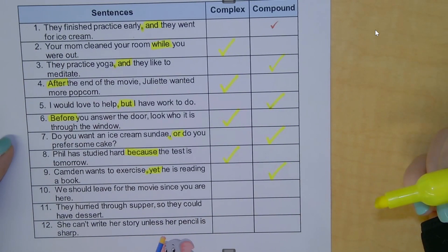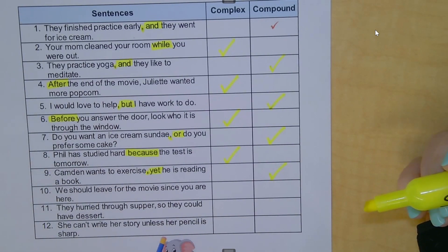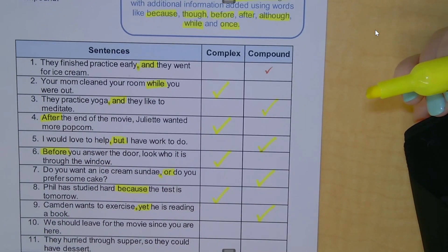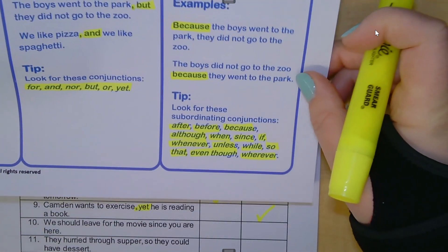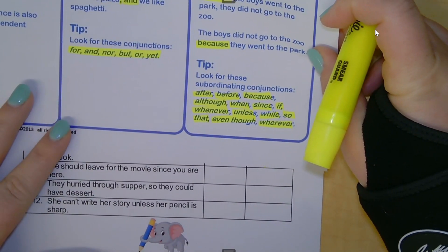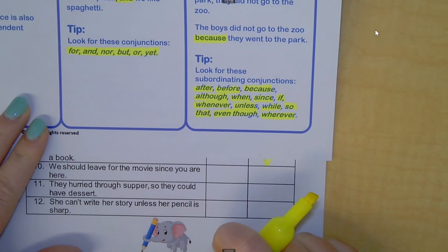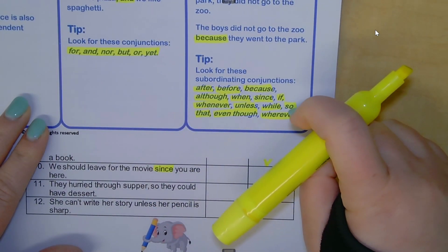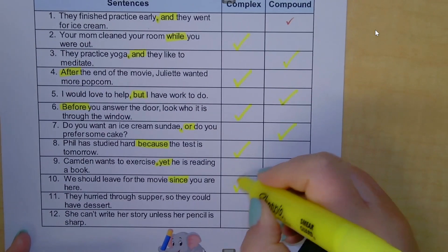Number ten: 'We should leave for the movie since you are here.' I see a keyword here that they didn't put on the main slide list, but if you printed off your full list it was there. Do you see a word from the conjunctions list in the sentence? 'Since' — since is a clue word that this is a complex sentence because it is a subordinating conjunction.